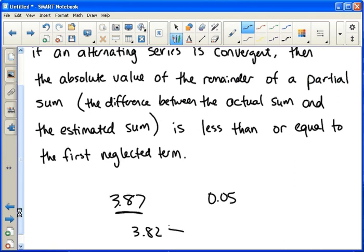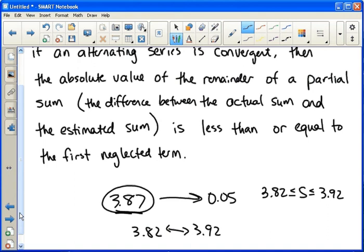Because your estimate, 3.87, can't be any farther off than 0.05. So the real answer, the total sum would have to be between 3.82 and 3.92. So you look at the first neglected term, in other words the first term you didn't use. And that gives you what's sometimes called an error bound. You know you're wrong by no more than that amount.